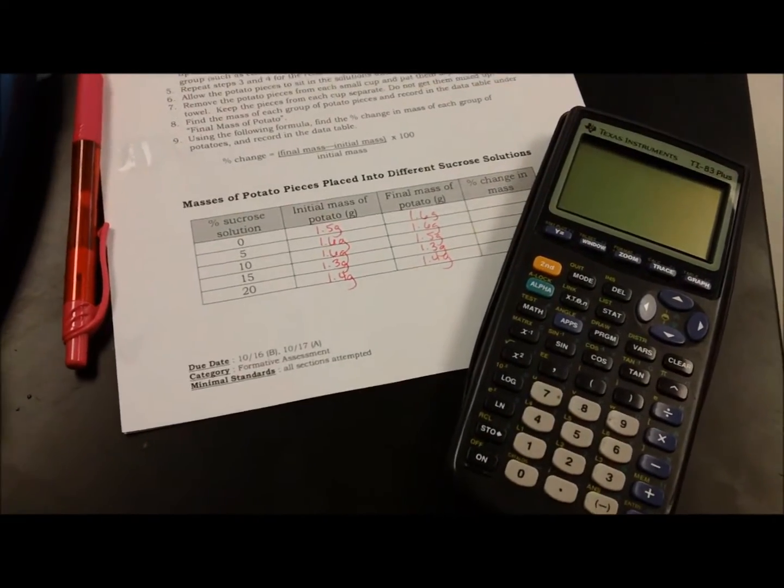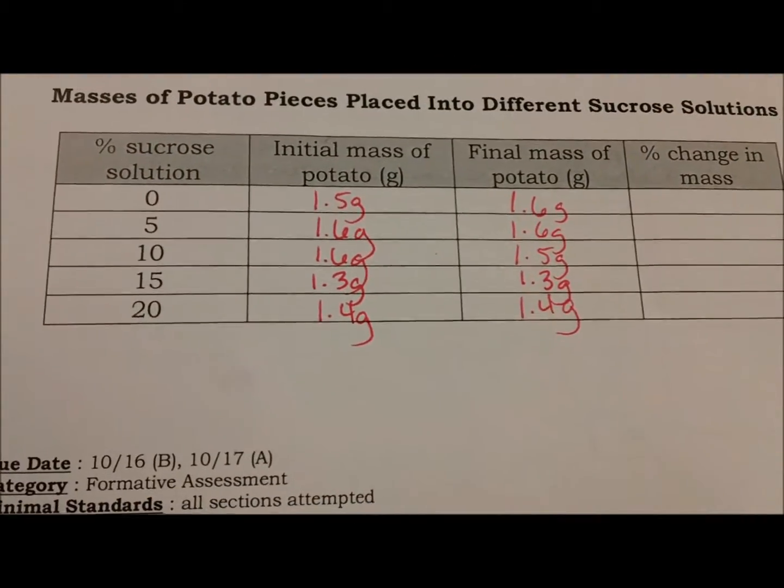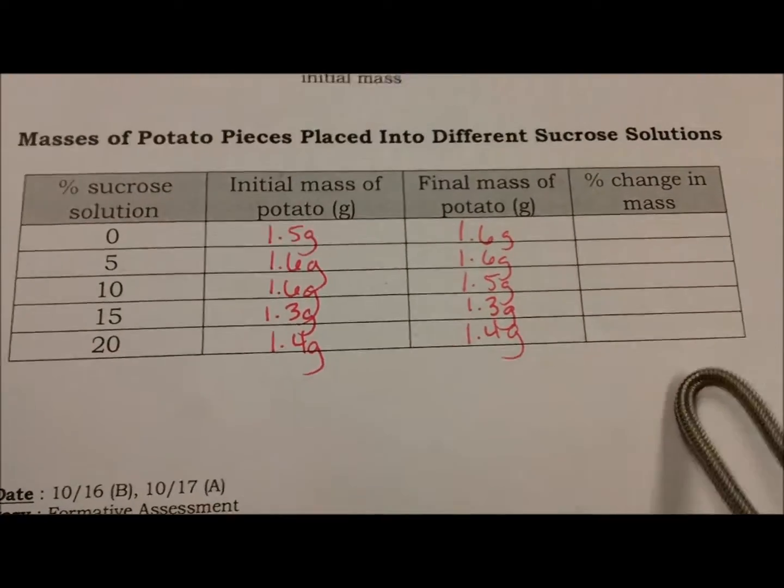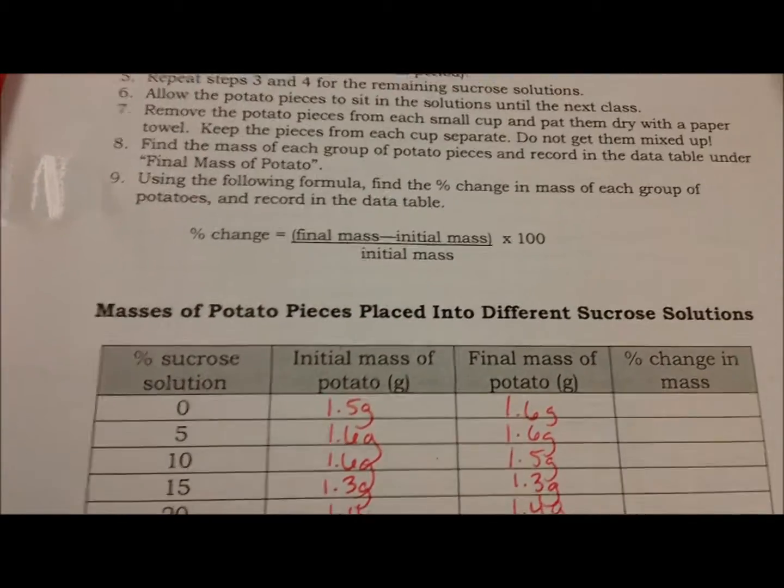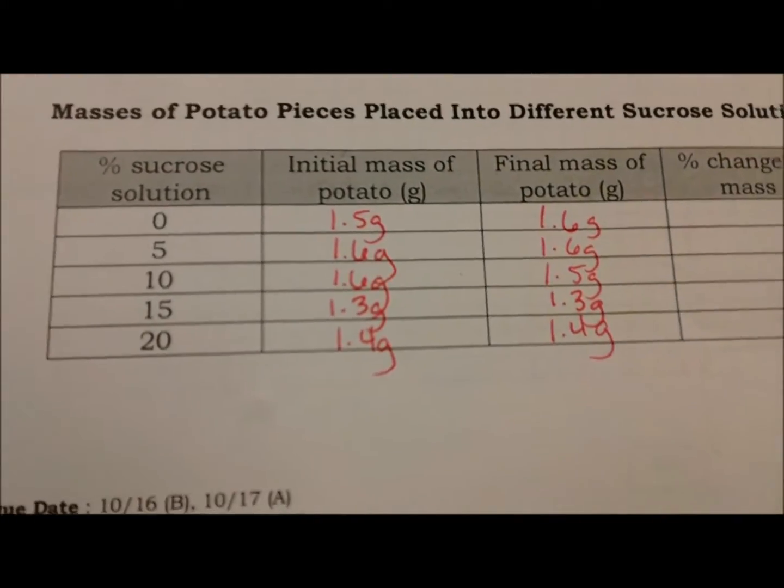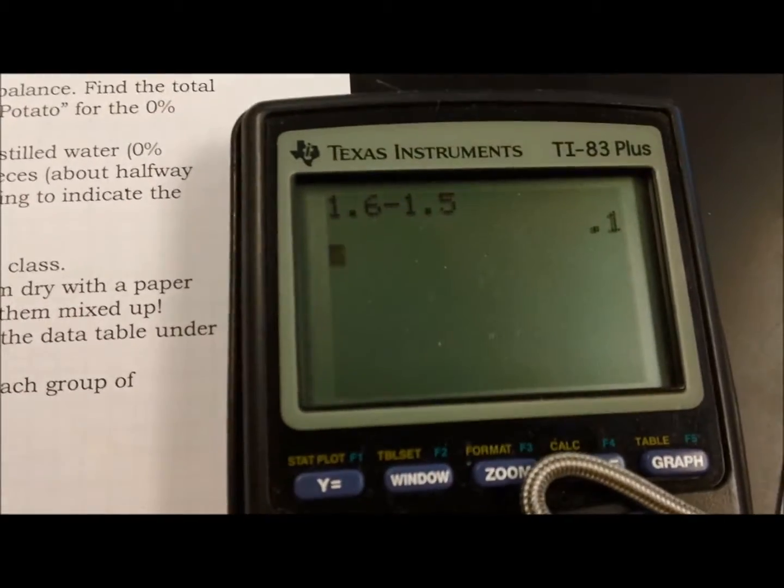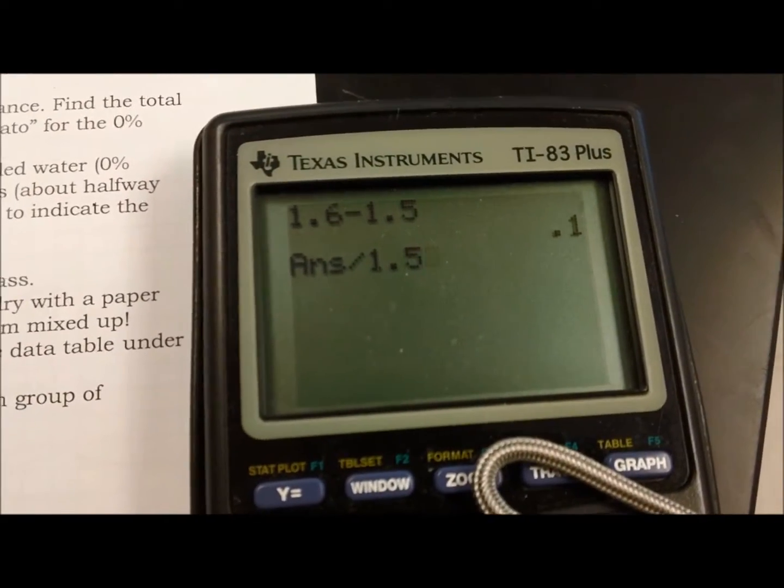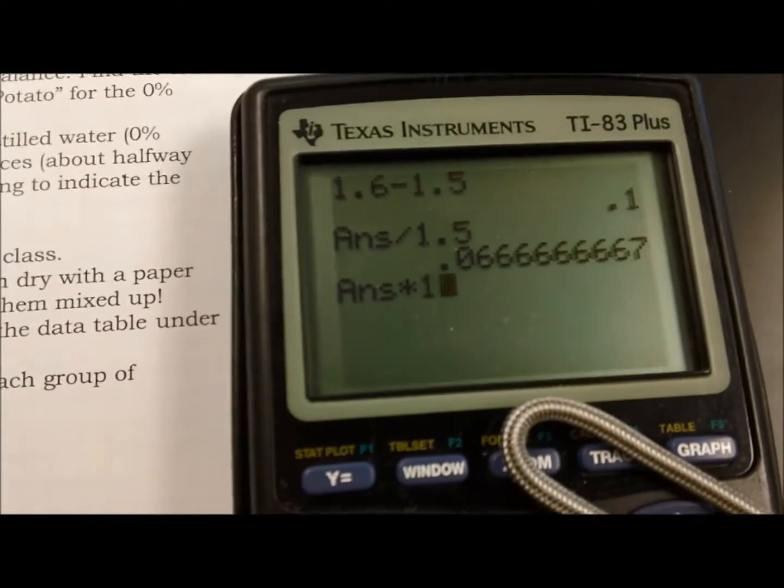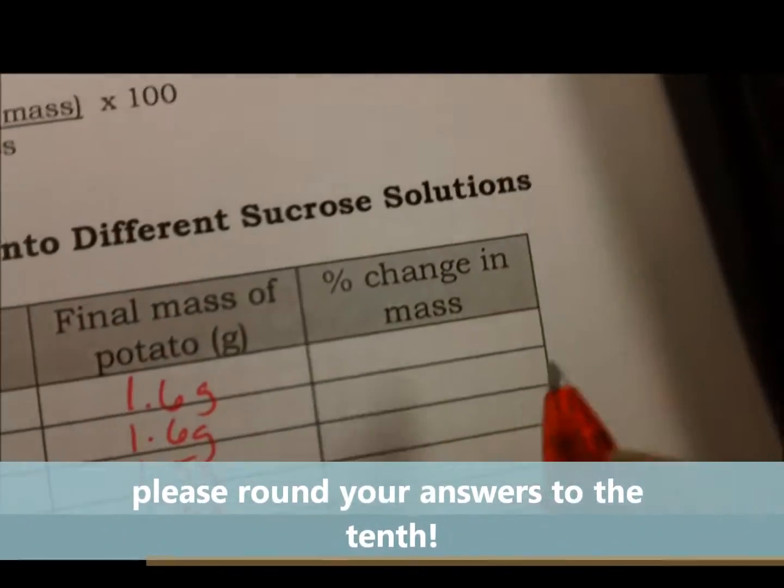Calculating percent change in mass will require a calculator. You also need to know your final and initial masses of the potatoes. To calculate percent change in mass, you will take the final mass and subtract the beginning, and then divide that by the initial mass. For instance, we will take 1.6 minus 1.5, that gives us 0.1, divided by the initial mass which was 1.5. When we multiply this times 100, we now have a 6.7% change, which we will record right here.